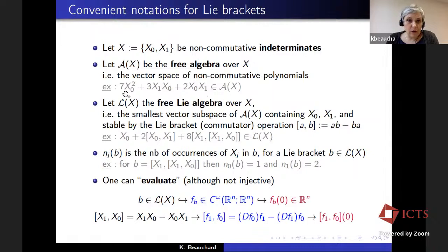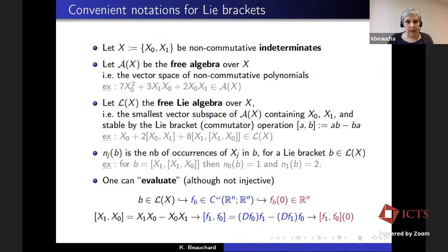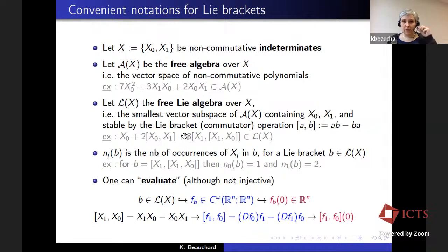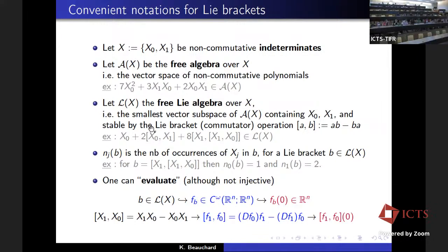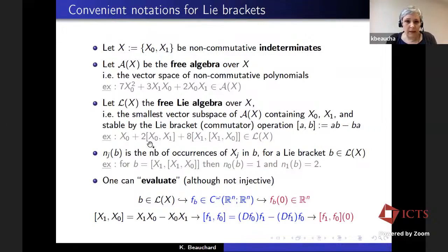Inside this vector space, I define a subspace L of X, called the free Lie algebra, which is the smallest vector space of A of X which contains the letters X0 and X1 and which is stable by the Lie bracket operation. Inside L of X, you have all the iterated Lie brackets, and also linear combinations of those iterated Lie brackets.